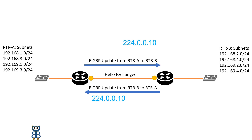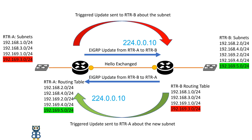EIGRP routers do not send periodic updates or full table routing updates. Updates are sent only when a change occurs, and include only the change.